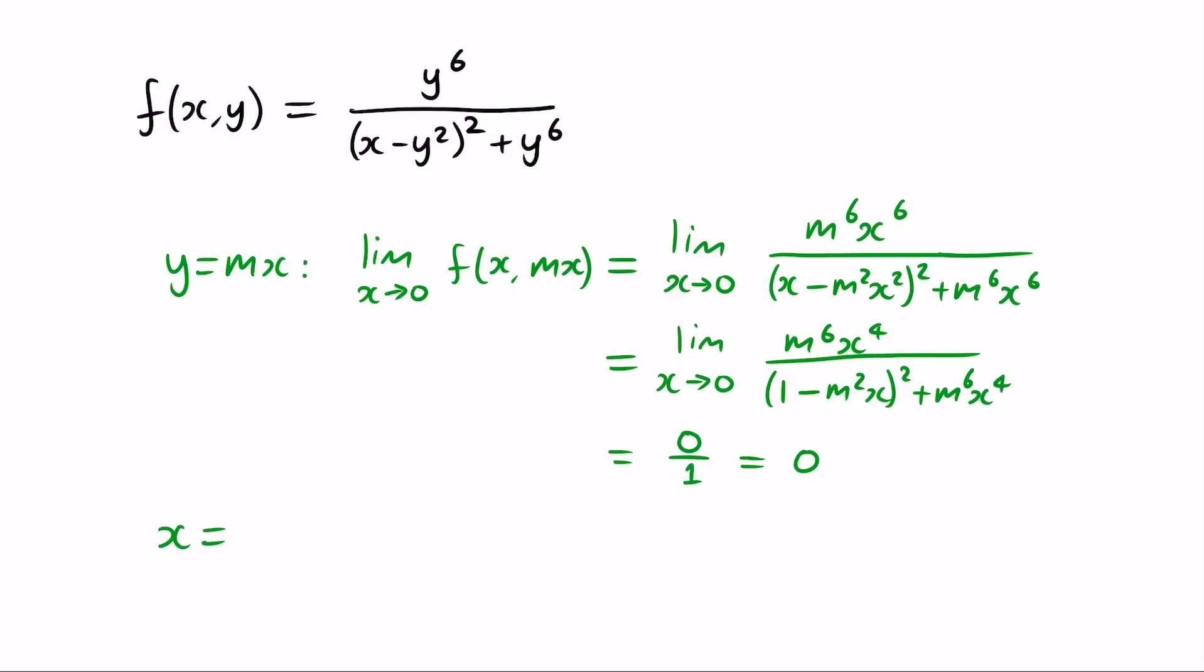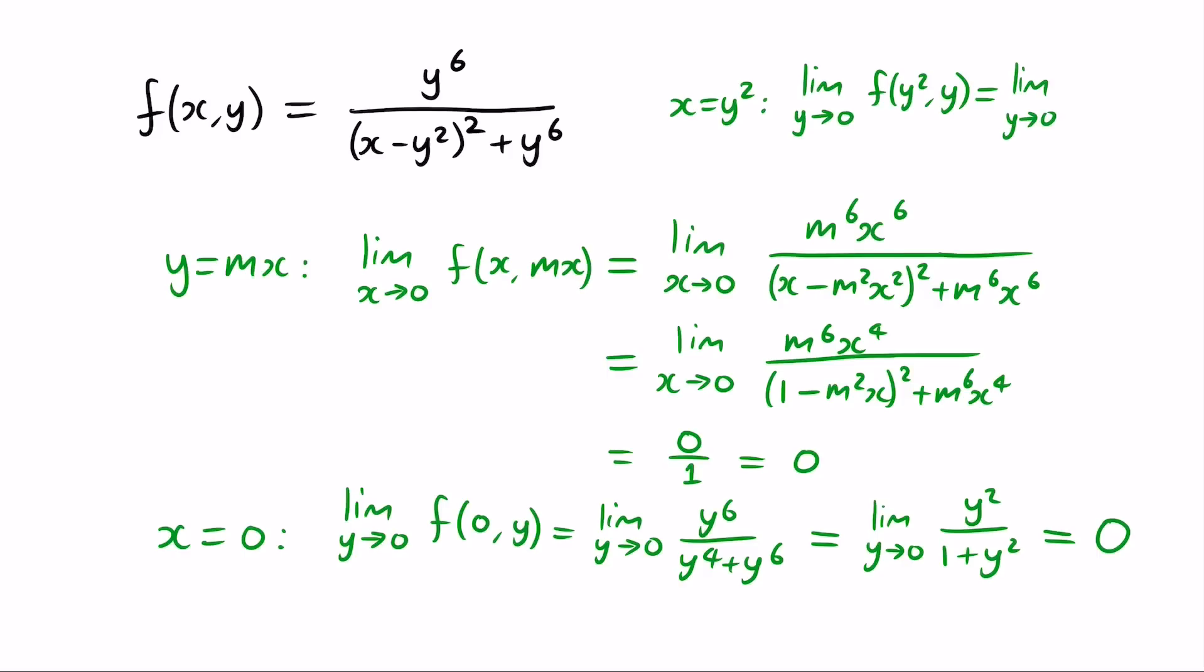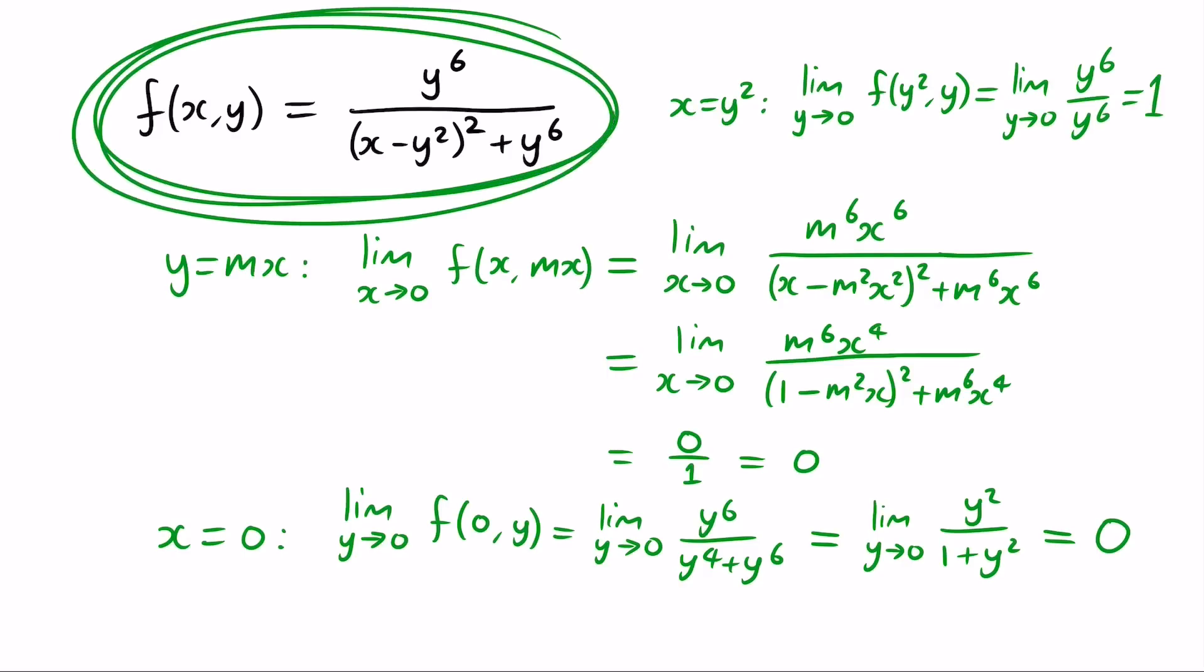And now the moment of truth, let's check the last special line x equals 0. After getting rid of the x's you can now see why we needed y to the power of 6, because after cancelling out y to the 4, we once again have a situation where the numerator approaches 0 while the denominator approaches 1. So the limit is 0 along every straight line path. But it is not 0 along the curved path x equals y squared, for if we plug in x equals y squared, we get y to the 6 over y to the 6 which approaches 1. We did it! We found a rational function which tricks us on every straight line.